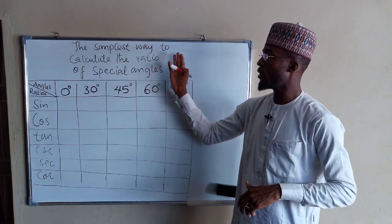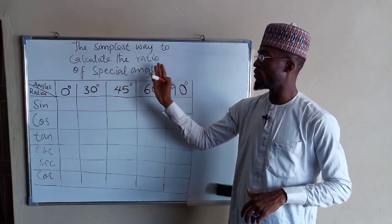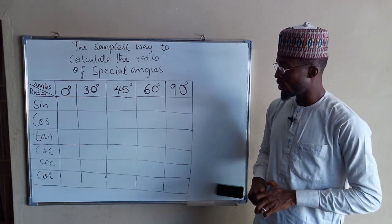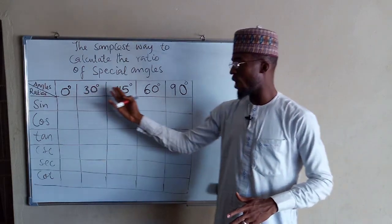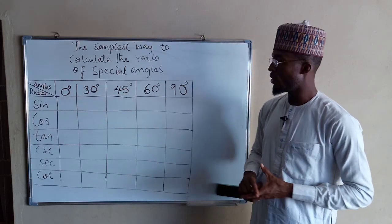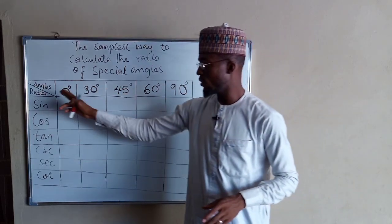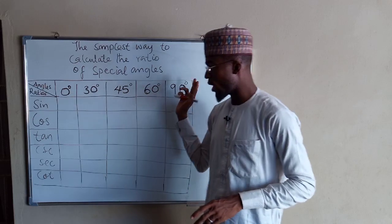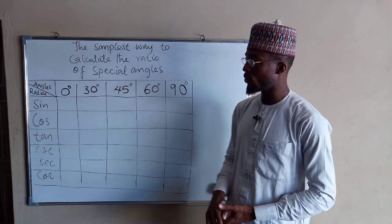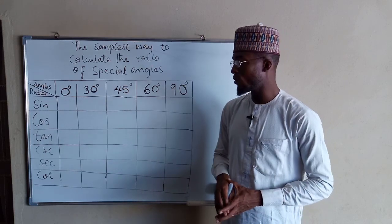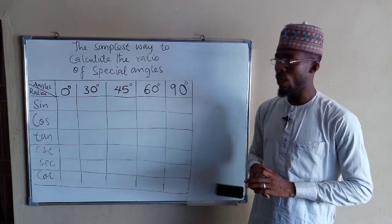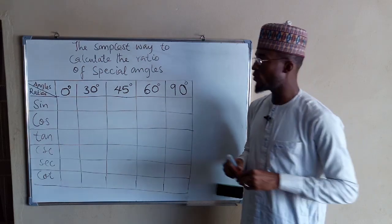Good day viewers. The simplest way to calculate the ratio of spatial angles. Given these spatial angles from 0 to 90 degrees, you are asked to find sine, cosine, tan, cosec, sec, and cot of these angles. The simplest way to do that is as follows.